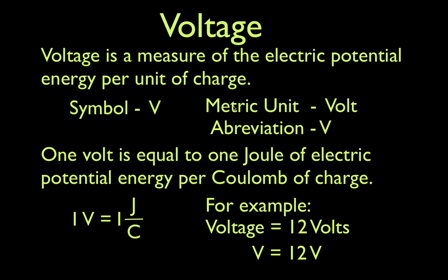Okay, now what is one volt? One volt is equal to one joule of electric potential energy per coulomb of charge. Once again, it's joules per coulomb, so really a volt is an abbreviation for joules per coulomb.